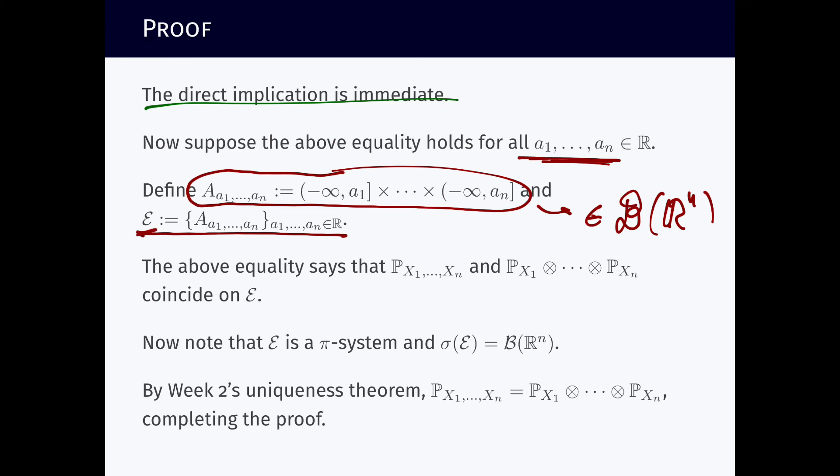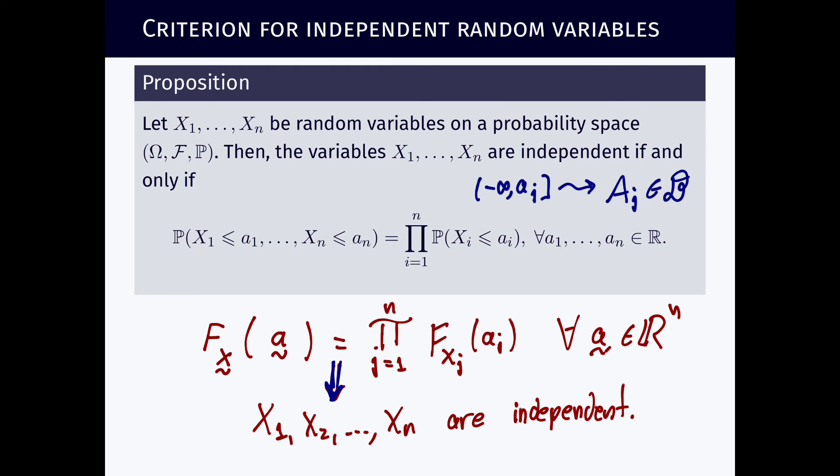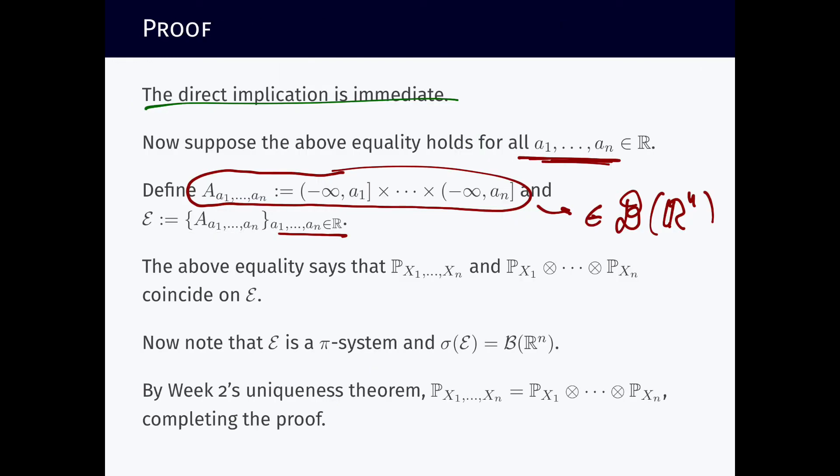And well, if we come back here, this equality says that the distribution of these vectors and the product measure of each of their distributions alone, they coincide on this family of sets.